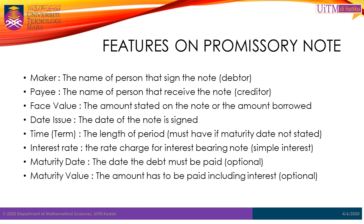Number 3, the face value — this is the amount stated on the note, or the amount borrowed. Number 4, date of issue — this is the date the note is signed. Number 5, time or term — which is the length of the period; it is required if the maturity date is not stated in the note. Number 6, interest rate — the rate charged for an interest-bearing note.